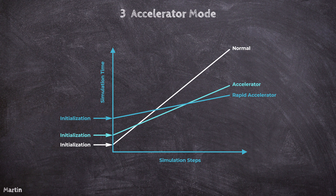Choosing the right simulation mode requires balancing the overhead of code generation against the expected execution time. For small, simple models or quick tests, Normal Mode is often the most efficient. For larger, more complex models or long-duration simulations, Accelerator Mode and Rapid Accelerator Mode can significantly reduce total simulation time.